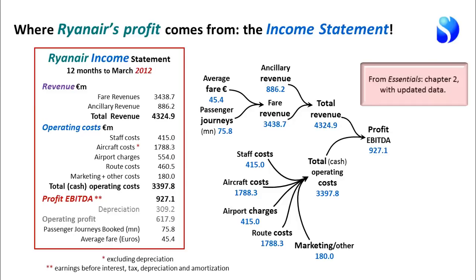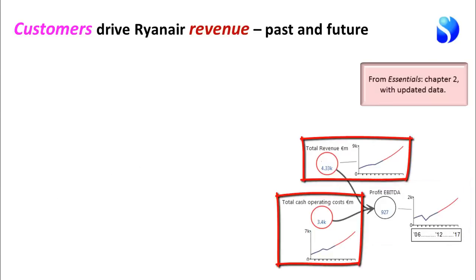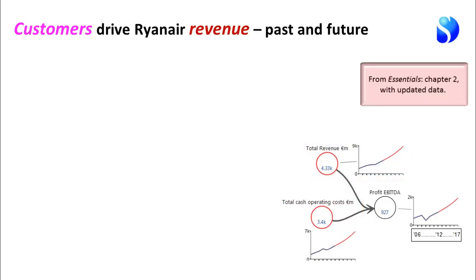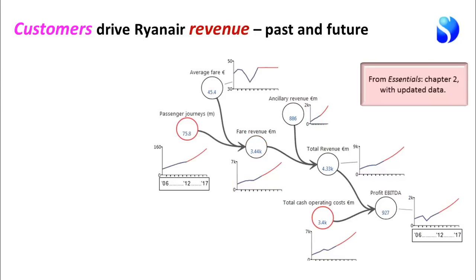This causal relationship between profit and its drivers is true not just for one year — the 12 months to March 2012 — but for every single period of the company's performance. So here is the time chart of EBITDA profit, and the time charts for revenue and operating costs that gave rise to the profit history up to 2012 and could plausibly give rise to the profit projection out to 2017. Here also is the plausible projection of fare revenue and ancillary revenue going out to 2017, along with the history in the blue section up to 2012.